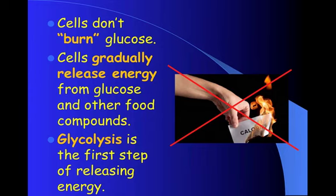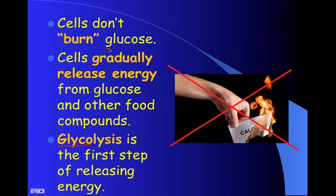We talked about ADP and ATP in the photosynthesis unit, and we're going to talk about ADP and ATP again in the cellular respiration unit. The process of releasing energy and the first step to cellular respiration is glycolysis. The prefix glyco has to do with glucose, so glycolysis is the first step of releasing energy.